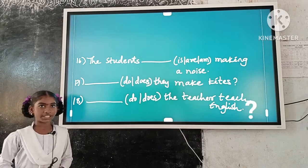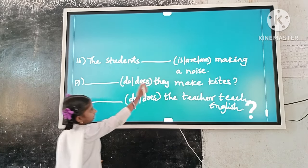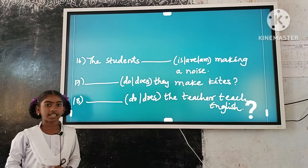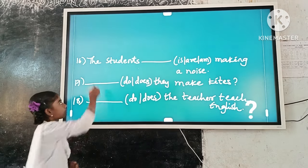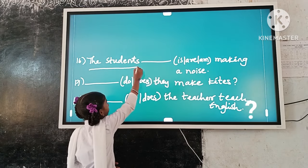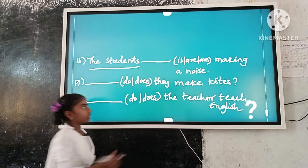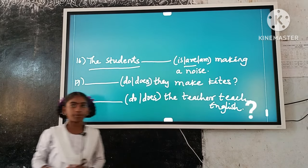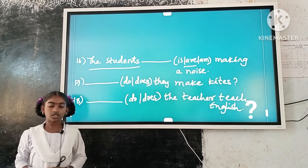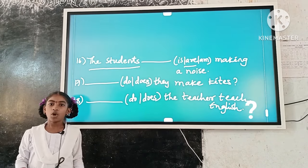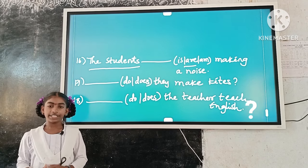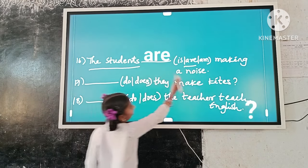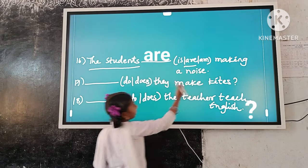Example number 16: The students dash making a noise. Here, the subject is plural. 'Are' is a plural verb form. So, plural subject and plural verb form agree. The answer is: The students are making a noise.